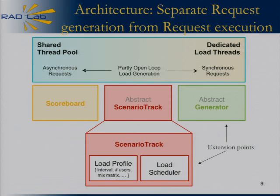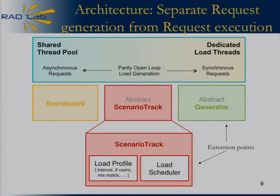To support the full spectrum of load generation, the key is separating request generation from request execution. That lets you create a request with all needed information and hand it off to any thread — there's no thread affinity. This provides the flexibility to do open-loop load generation as well as partly open-loop load generation, which we hadn't seen in existing tools. And when targeting a new system, you need to provide a generator and describe the operations specific to that system.